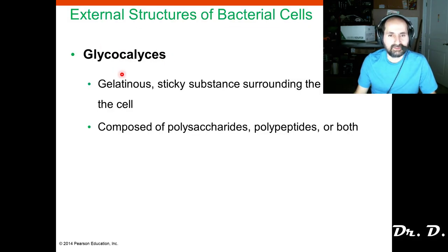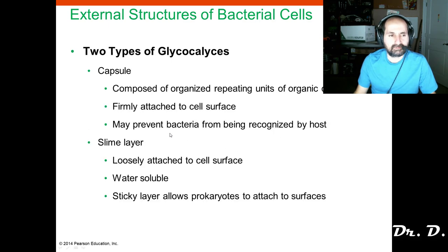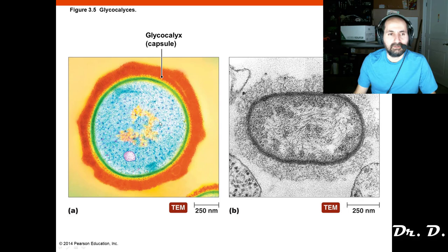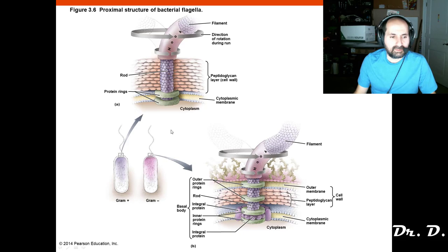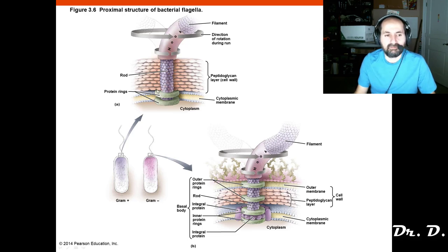Remember the glycocalyx — a sticky, gelatinous substance made of sugar and protein or both. You should know the two types of glycocalyx: the capsule and the slime layer, and know the difference between the two. We talked about flagella — you should know that the bacterial flagella works by spinning like a propeller; it does not beat back and forth like it does in eukaryotes.